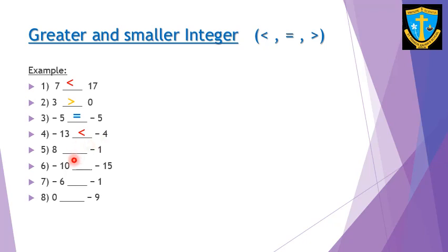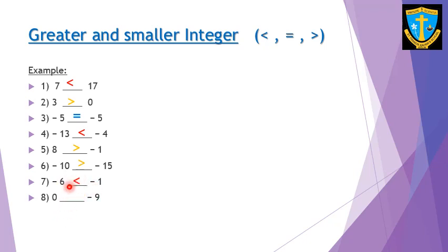Next: 8 is greater than negative 1 since 8 has higher value. Negative 10 and negative 15 — negative 10 is closer to zero, so negative 10 is greater than negative 15. Negative 6 and negative 1 — though 6 may look larger, it carries a negative sign, so negative 1 is greater than negative 6, meaning negative 6 is less than negative 1. The pointed sign always faces the lesser number and the open side faces the greater number. Finally, 0 is greater than negative 9.